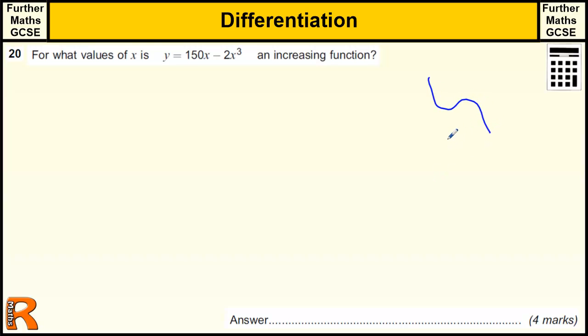Okay, now increasing function means it's going up, but for most of this function it's going down. But between this bit and this bit the function is going up, and then the rest of it is going down. So we're trying to find whereabouts in here it's actually increasing, where the gradient is positive of the function.